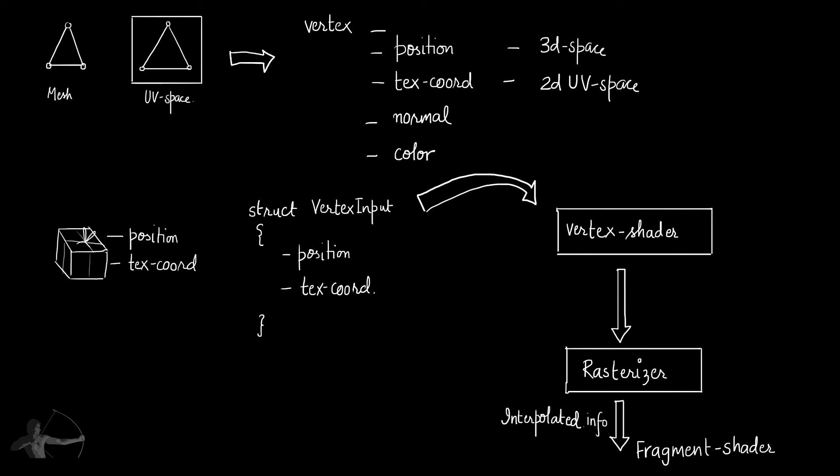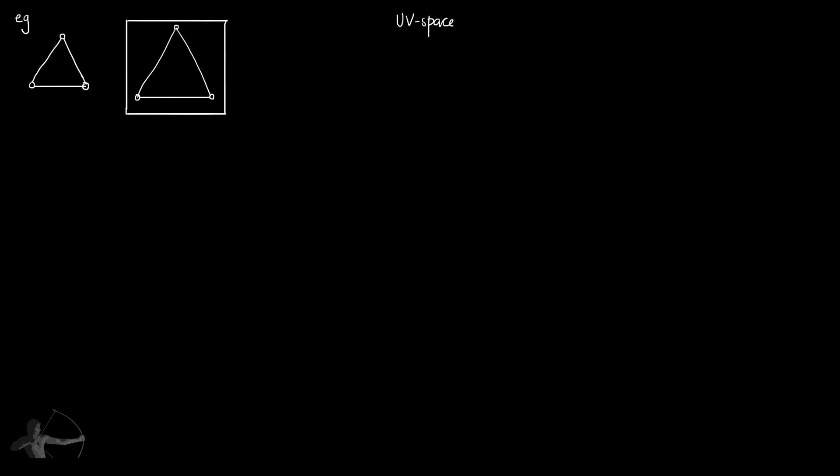Let's see how the rasterizer interpolates the texture coordinate information and passes it to the fragment shader. For example, we have our triangle and we assign the coordinates of its vertices in the UV space. The UV space is in the range of 0 to 1 — it is a simple 2D space. The complexity and confusion here is that the origin of texture space is different for every platform.